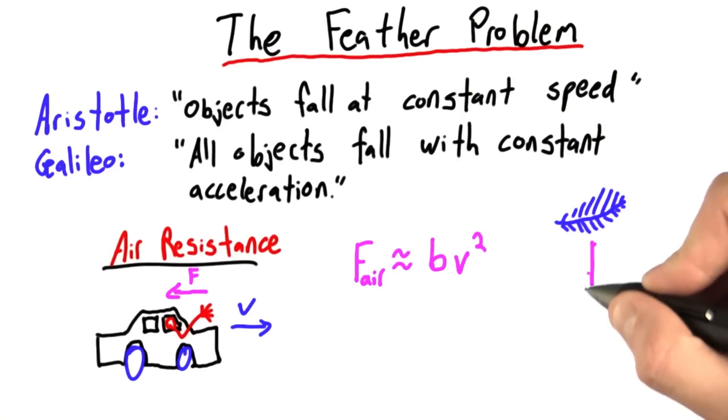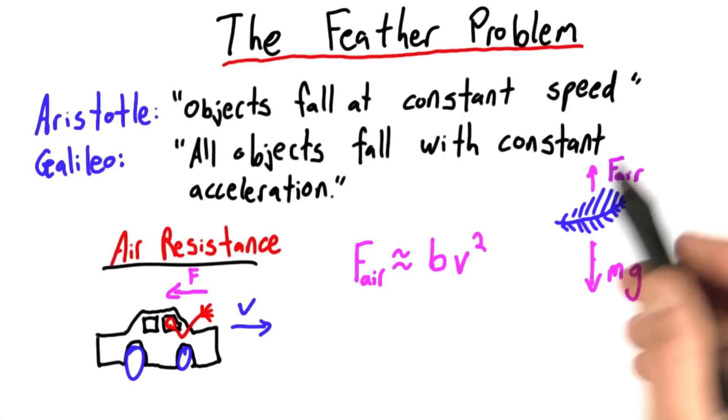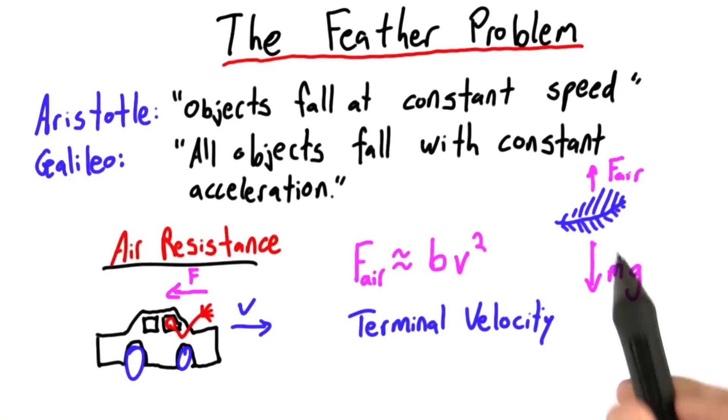So let's say you have this feather and it's being pulled down by gravity. As its speed increases, the air resistance force it feels will also increase. What eventually happens is the feather reaches what's called terminal velocity, and that is the maximum speed that the feather reaches.